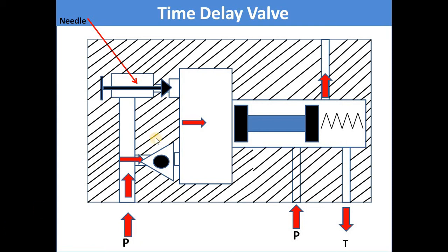Before starting the video, I will cover some theory, and then we will go towards the animation. Basically, a time delay valve consists of three units: a flow controller and check valve, an air reservoir, and a 3x2 DC valve.